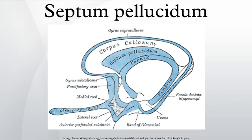The septum pellucidum is often confused with the septal nuclei. Logically, the septum pellucidum is a septum in the medial plane and could therefore be termed medial septum, but this is incorrect. The term medial septum is reserved for a small group of nuclei which are closely associated with the septum pellucidum.